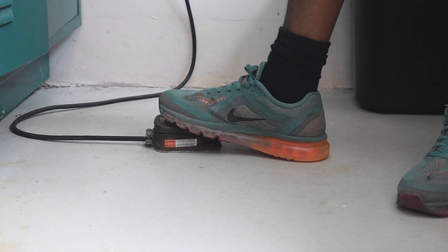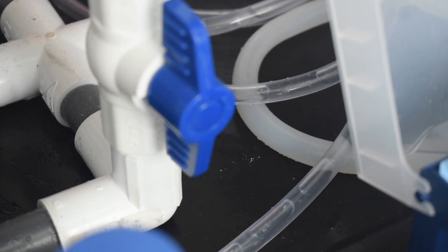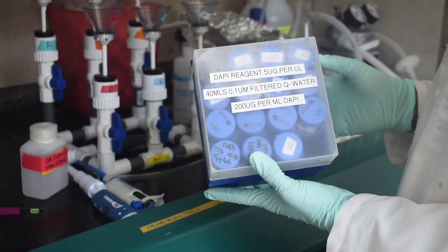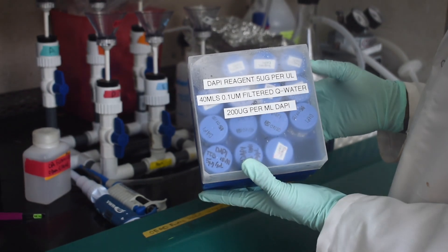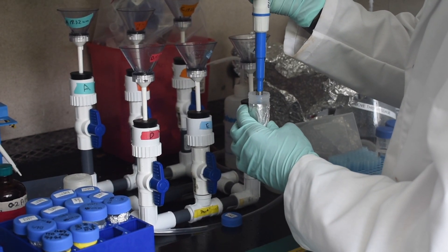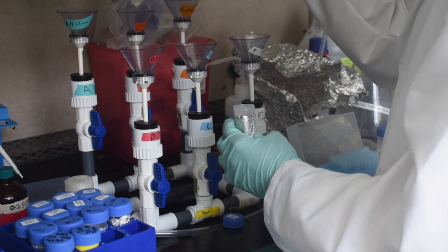We filter the bacteria through and then we add 1 mil of a 5 nanogram per microliter DAPI solution onto the filter and we let it stain for 3 minutes.